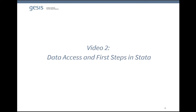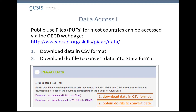The second video shows you how to get access to the international PIAC data and how to get the data running in Stata. The public use files for most countries can be accessed via the OECD webpage at the link shown here. Unfortunately, the data is not directly available in Stata format but needs to be converted. If you click on 'Download the datasets', you will be provided with the opportunity to download the data in SAS, SPSS, or CSV format.